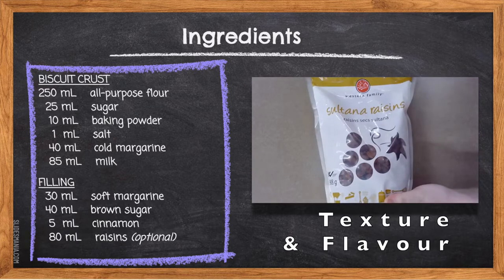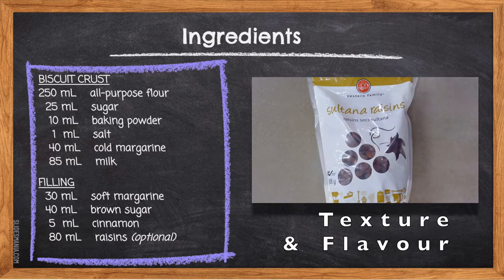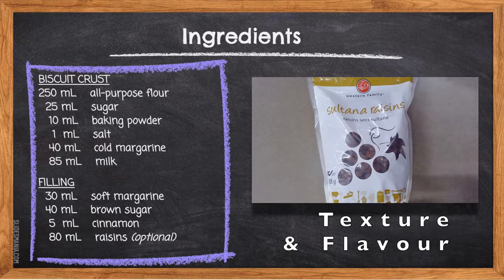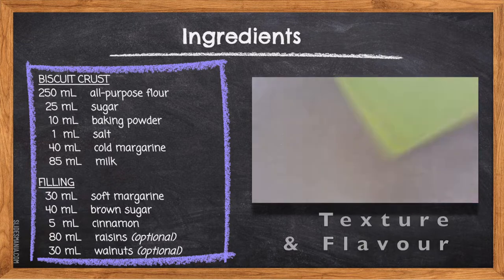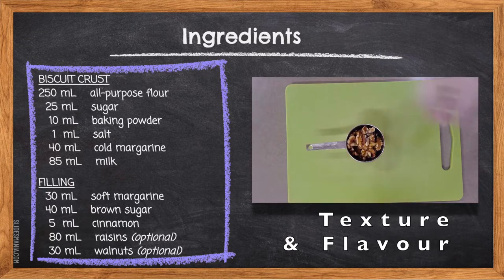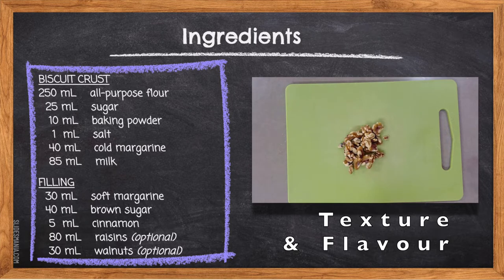80ml Raisins (Optional) — raisins are dried grapes, and the process of drying them intensifies their nutrients and sugars. The raisins will add a chewy texture to our cinnamon pinwheel. They are high in iron and fiber. 30ml Walnuts (Optional) — walnuts will add a crunchy texture and are rich in heart-healthy fats, omega-3s, and high in antioxidants.